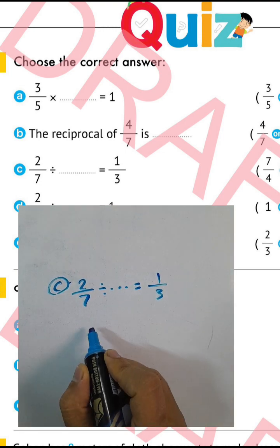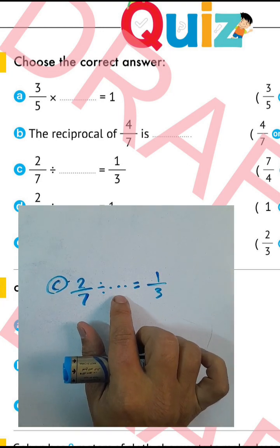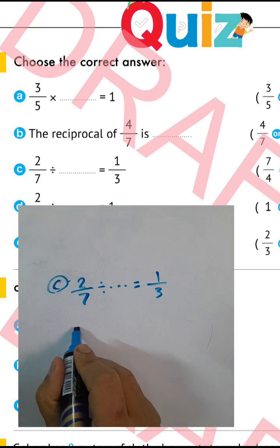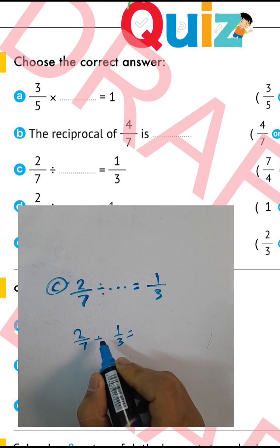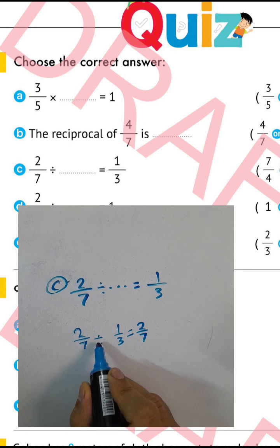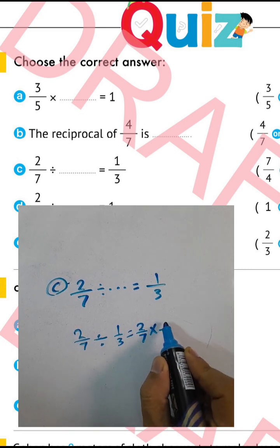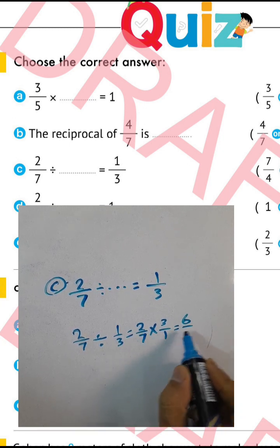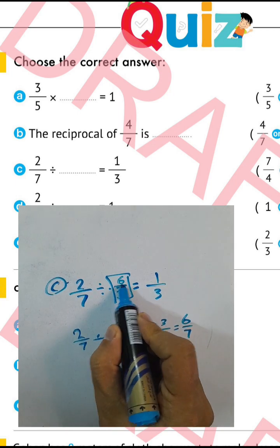First step: we find the divisor. The divisor equals the dividend divided by the quotient — two over seven divided by one third. Write two over seven, convert from division to multiplication and take the inverse of one third, which is three over one. Two times three equals six, one times seven equals seven. The result is six over seven.